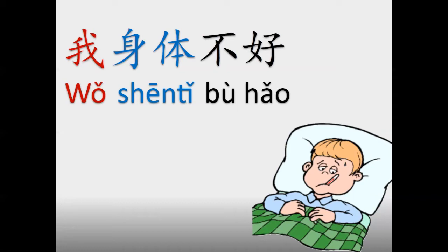What we can see here is that we are not using the verb to be in Chinese, although in English and other languages we usually use this verb. Another interesting thing is that we have wǒ and shēntǐ — a pronoun and a noun together. In this case, we are using the adjective hǎo and the negative bù, so bù hǎo: my health is not good.